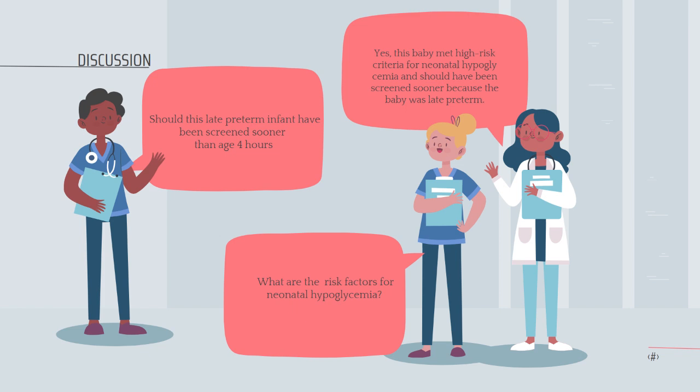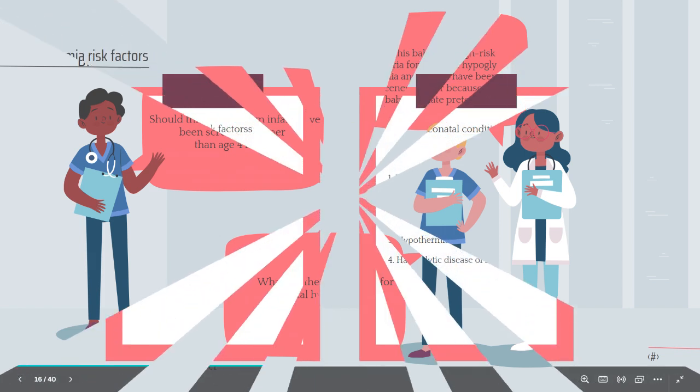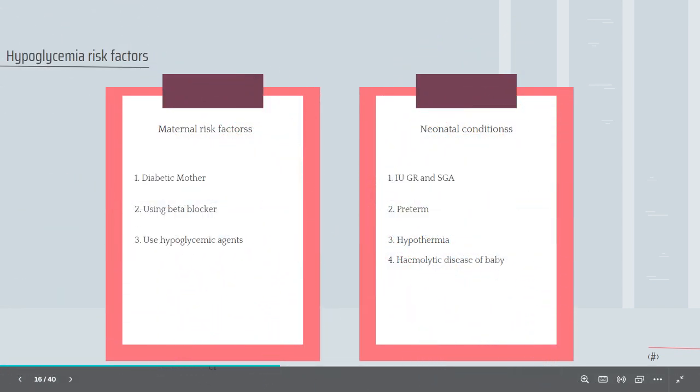Should this late preterm infant have been screened sooner than age four hours? Yes, this baby met high-risk criteria for neonatal hypoglycemia and should have been screened sooner because the baby was late preterm. Let's discuss the risk factors for neonatal hypoglycemia. The risk factors are classified into maternal and neonatal risk factors.